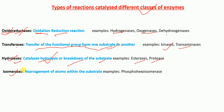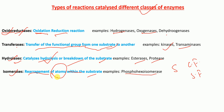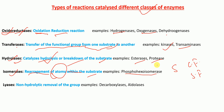Isomerases catalyze the rearrangement of atoms within the substrate. An example is phosphohexose isomerase. Isomers have the same chemical formula but different structural formulas, so isomerases rearrange atoms so that the structure changes but the chemical formula remains the same.